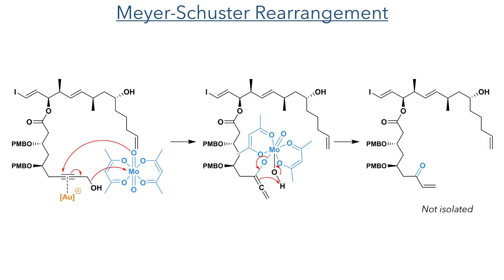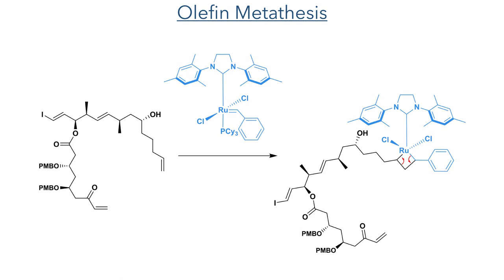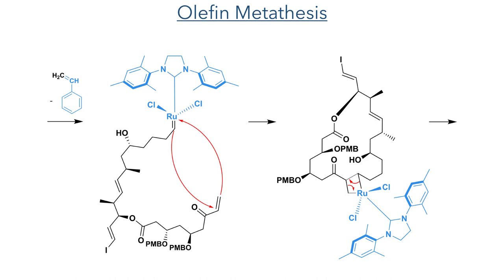This reaction was not worked up and the product was not isolated. Instead, Grubbs 2nd generation catalyst was directly added to the reaction mixture to promote an olefin metathesis reaction. This undergoes a [2+2] cycloaddition with the alkene, forming an unstable four-membered intermediate. This eliminates styrene and leaves the substrate bonded to the ruthenium, where it then undergoes another [2+2] cycloaddition, this time in an intramolecular fashion. The cyclic four-membered intermediate fragments and forms the desired olefin, completing the formation of the macrocycle.